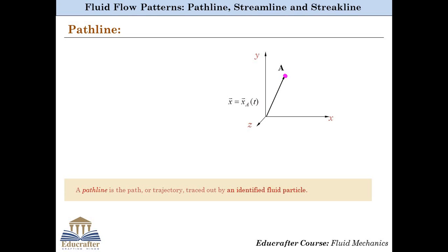Consider the same three-dimensional flow. Let a particle named A, at some instant of time t, be located at a position defined by the position vector xA. During a small interval of time dt, this particle moves to a new position defined by a new position vector xA. The path followed by particle A while moving from one point to the other in the time interval dt is defined as the pathline corresponding to particle A.